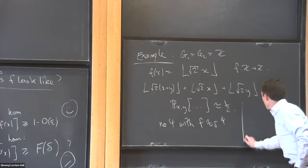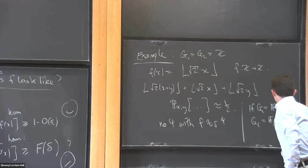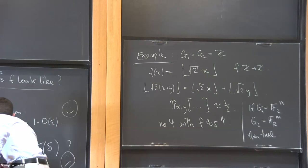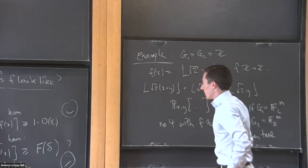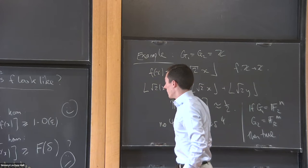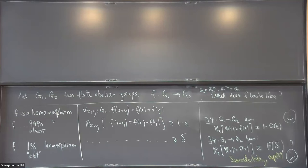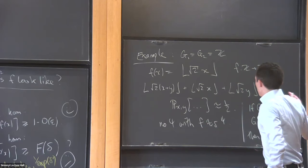You can fix this — you can repair the statement to take into account these examples. All I'll say for the moment is that if G1 and G2 are F2^n spaces over F2, then this is in fact true. I think it's due to Samorodnitsky, possibly around 2000. So it is true with some function of delta on the right-hand side, and his proof gives an exponential function of delta.